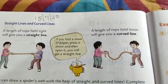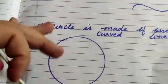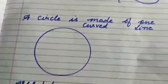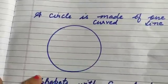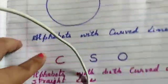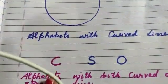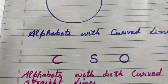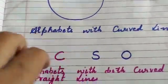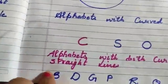Let us see a few examples of curved lines. A circle is made of one curved line. Alphabets with curved lines are C for cat, S, O. You can find some more.